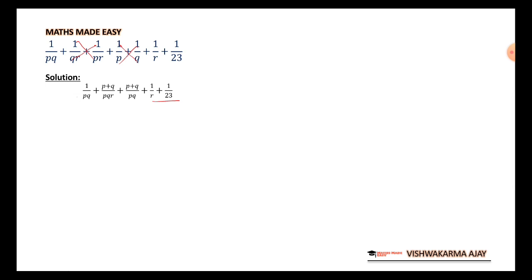Now from the first three terms, you can see that I can take pq common from the denominator. So if I take pq common, 1 upon pq in the bracket, I will be left with 1 plus p upon p plus q upon r plus p plus q upon 1, and the rest are going to be the same.